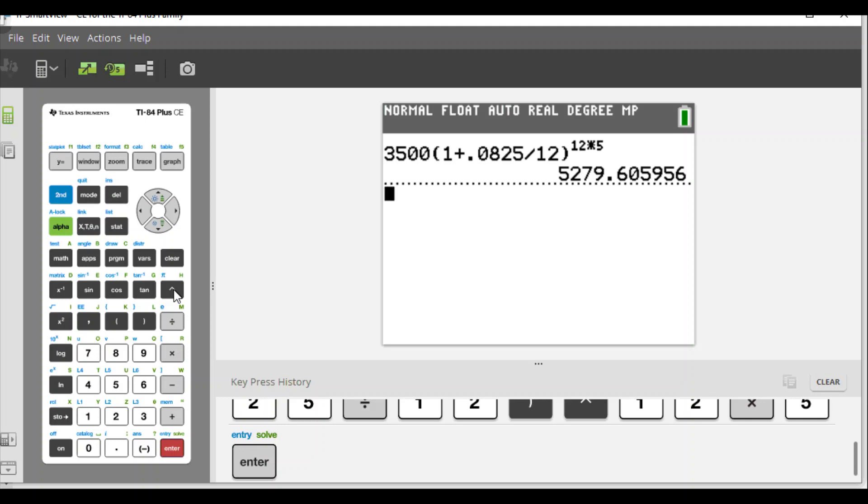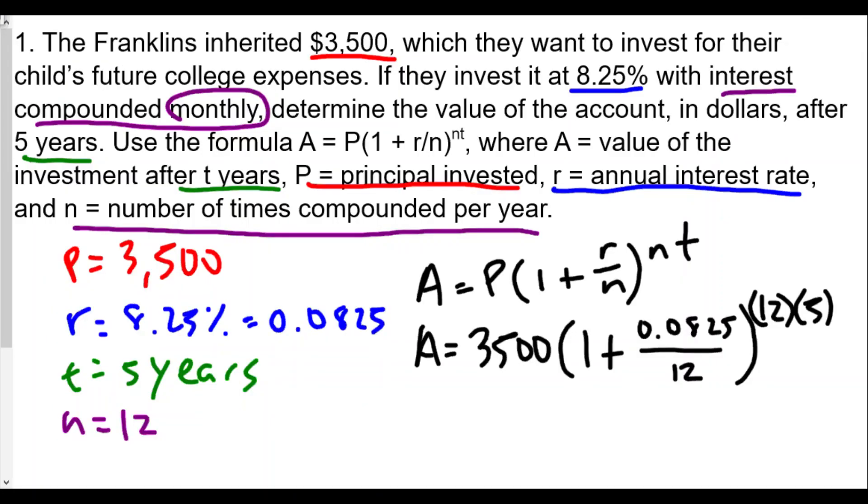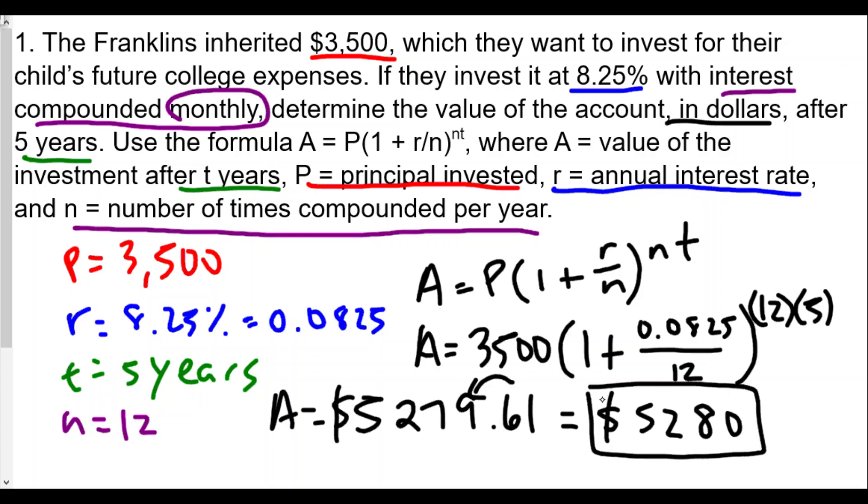That's our A value. It says determine the value in dollars after five years. Looking at the value, $5,279.61 in dollars, we'll probably round this up. Our answer will be $5,280.